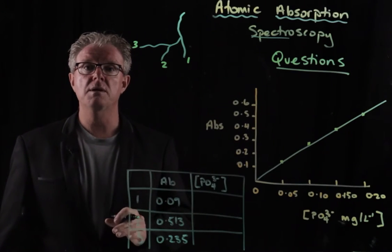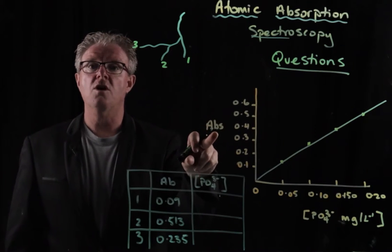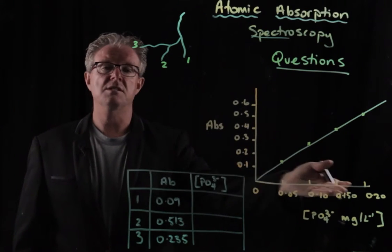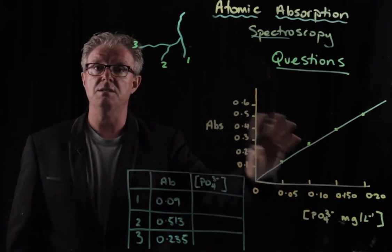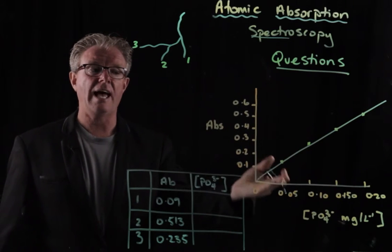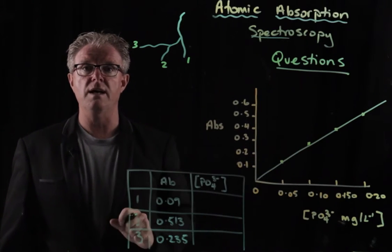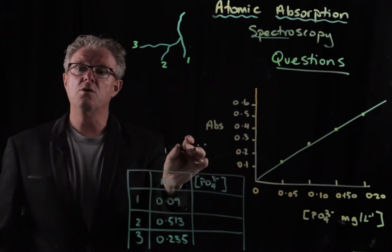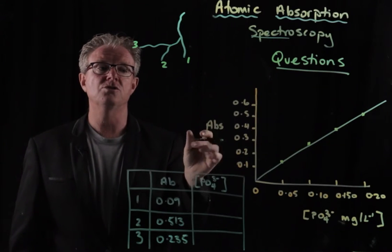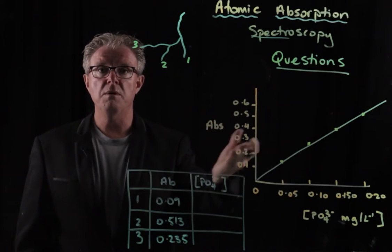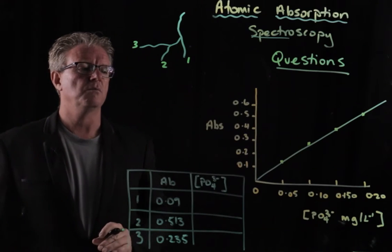And then we use a colorimeter to measure the absorbance of the blue solution and compare it to standards. So in that way, it's very similar. The concentration has a relationship with the absorbance value, but it's using a chemical reaction to create a colored solution that we then measure the intensity of absorbance.